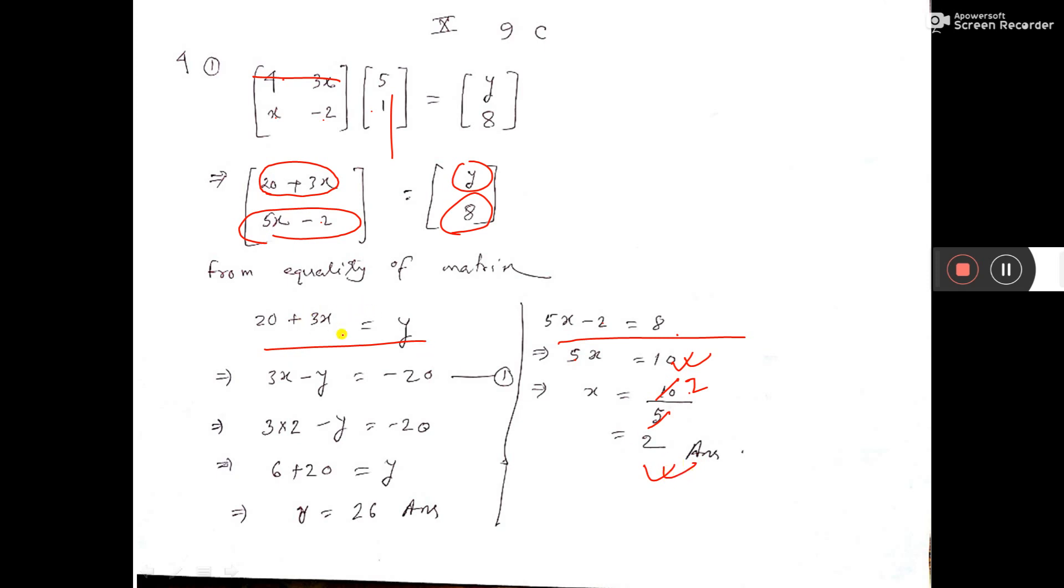After getting x equals 2, put the value of x here. It becomes 6. Take 20 to that side and y to this side, minus becomes plus. So y equals 26. You have got y and x. That's all.